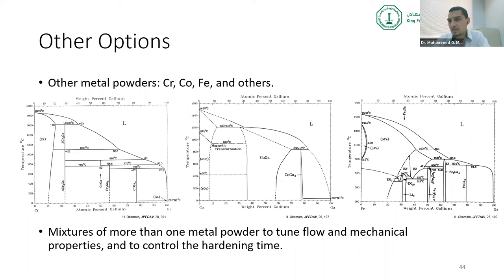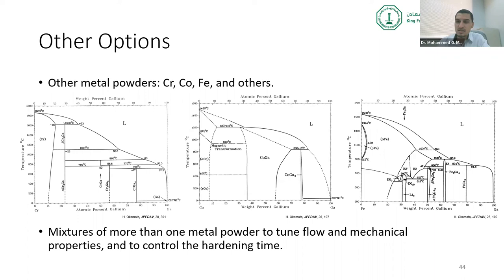Dr. Umar asked how gallium exists in nature. Gallium is not available as elemental gallium in nature — it exists as an impurity in other metal ores such as aluminum and zinc ores, mostly in the form of gallium oxide, from which it is extracted. There are no dedicated gallium mines. It is not a rare element but a scarce one — you can find it, but not easily.